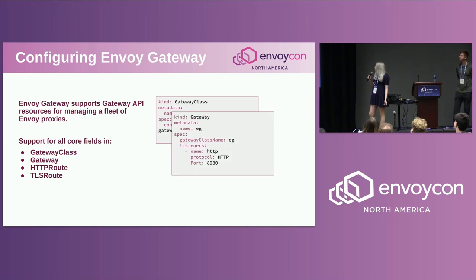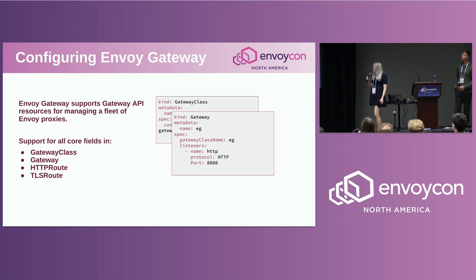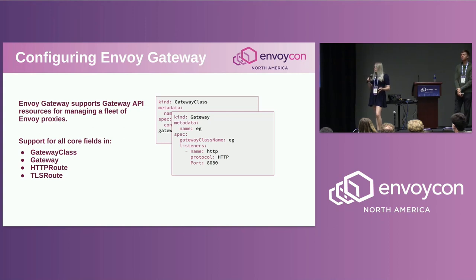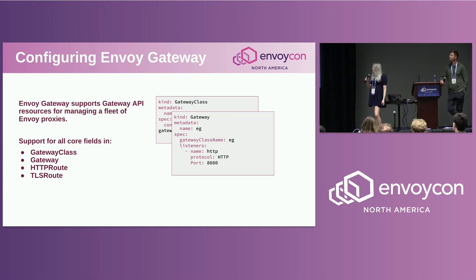The next thing you create is your gateway, which references that gateway class and lets you set up listeners for how you want Envoy Gateway to listen for requests — you can add multiple listeners. Once you create the gateway in your Kubernetes cluster, Envoy Gateway will spin up a deployment running Envoy proxy, a service for that Envoy proxy with the port you established in the gateway, and a service account for that gateway.